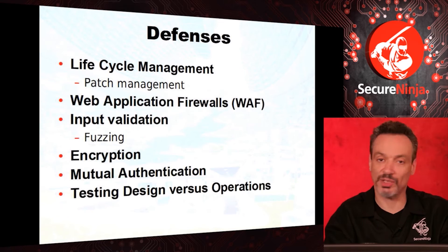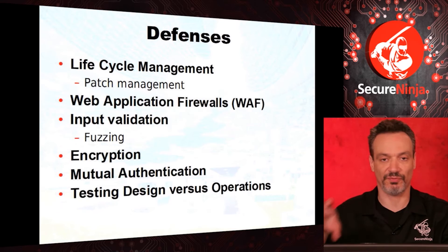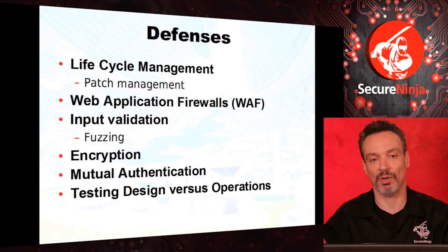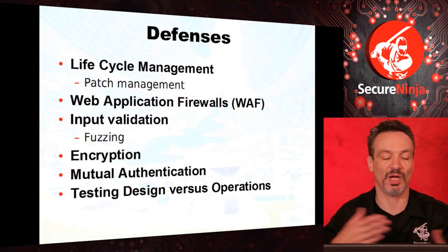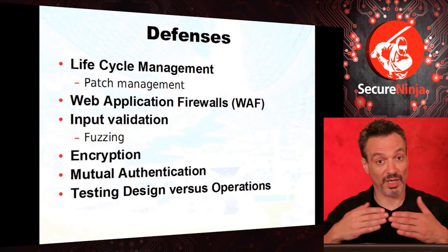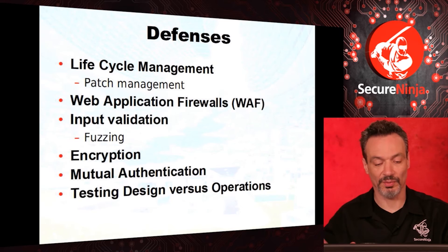Our defenses: certainly patch management, which we covered in the vulnerability section. Web application firewalls — you need something looking specifically for these invalid inputs. When you're testing, don't just test operations; test your design. There are fuzzing tools — just see how it responds to various inputs. Encryption isn't just to make things private; it's the only way to truly authenticate and check integrity. Use mutual authentication — I want to know who I'm talking to and I want them to know it's me. If you put more work into testing your design, I think you'd have fewer problems.